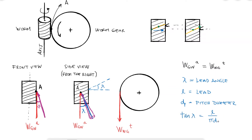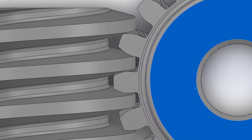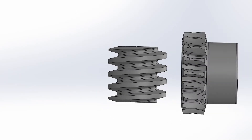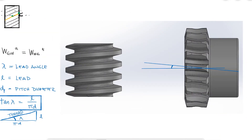For every rotation of the worm — equivalent to one full revolution — the gear tooth would advance a distance l, the lead. That's what we define as the lead angle. The lead angle of the worm, lambda, must match the helix angle of the worm gear, so the angle of the middle tooth that matches the back side of the worm is also the lead angle lambda.